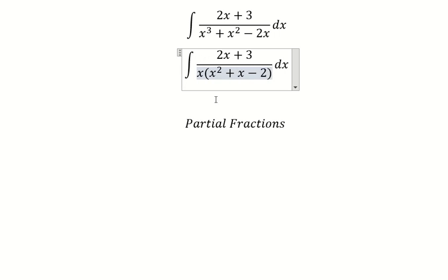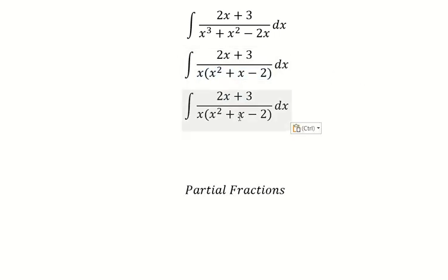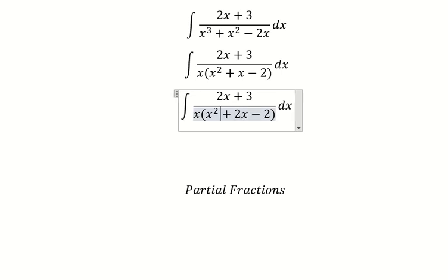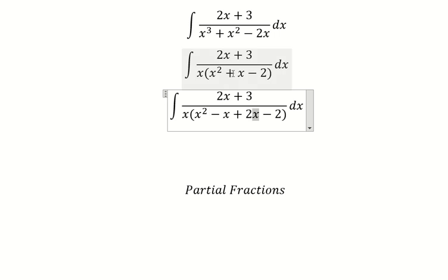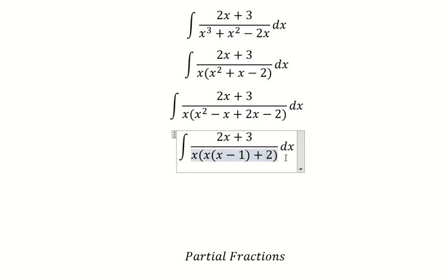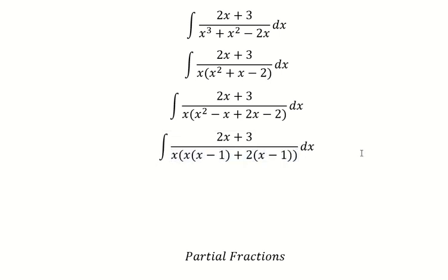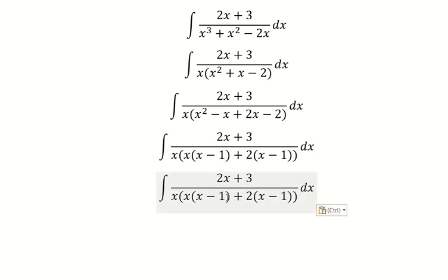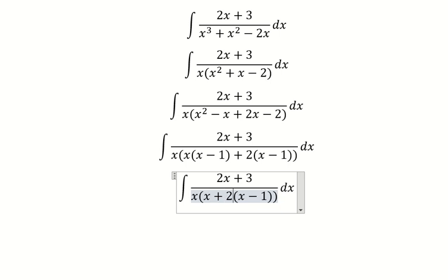We have 2x minus x, so we get positive x. Next, we can do factorization by x, then by the number two. Now we get (x minus 1) and (x plus 2), so we have the three factors.